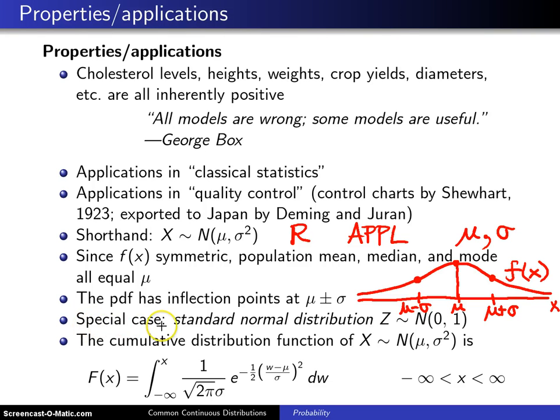There is a famous special case of the normal distribution called the standard normal distribution. Usually we use X for random variables, but tradition indicates that the letter Z, upper case Z, is used for the standard normal distribution with mean 0 and population variance 1, which means its standard deviation is also 1.